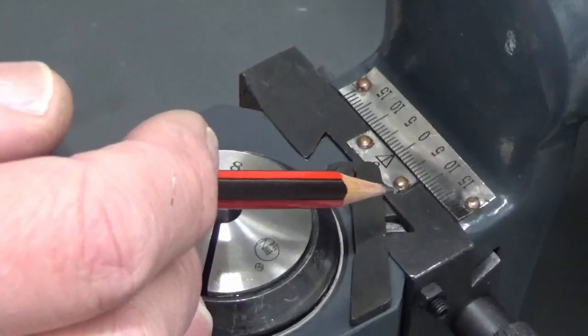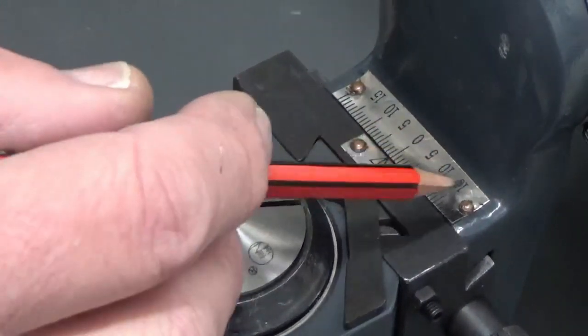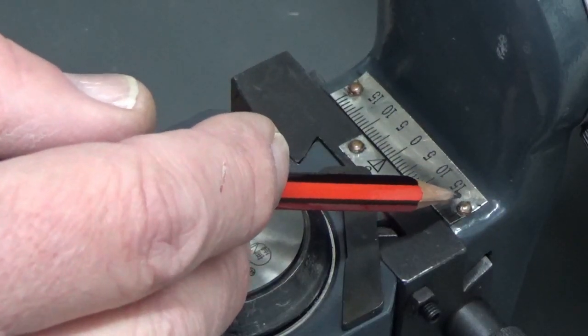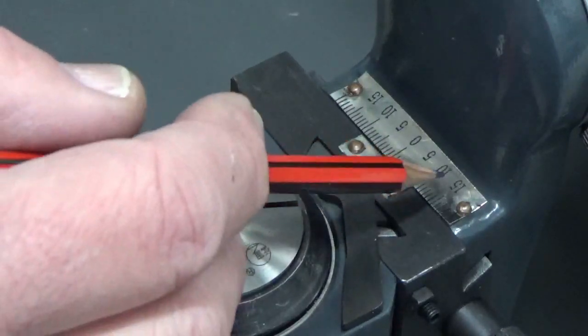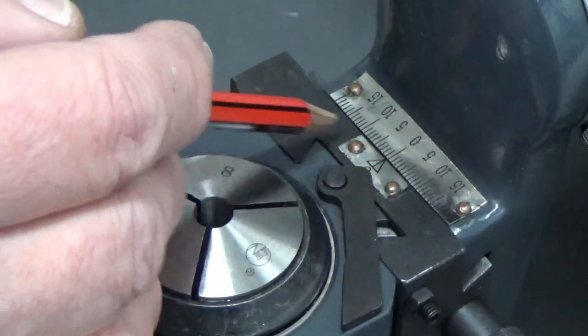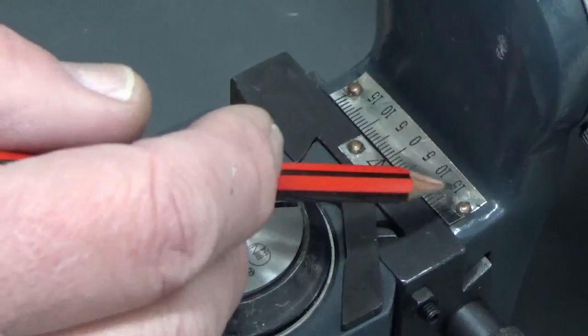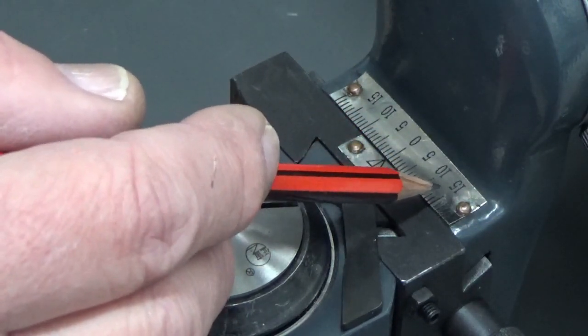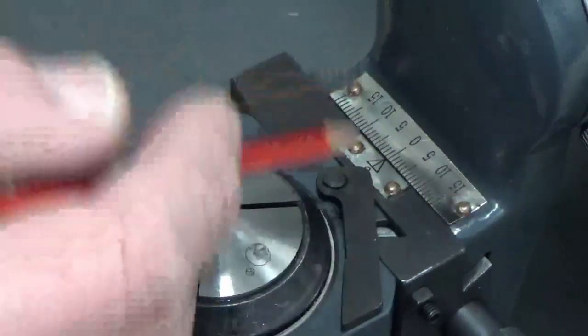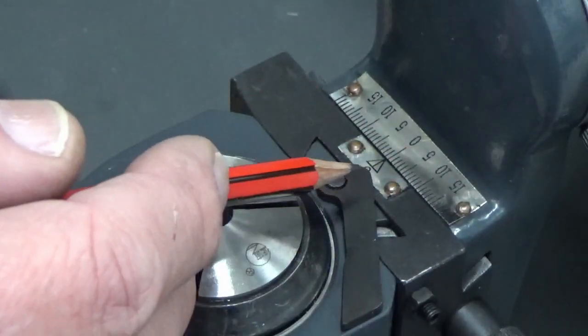Now if you look at some of the other D-bit grinders out there, in particular the Deckel which is basically what these are all copied from, they'll have a main graduation up the top area here and they'll have a subdivision graduation on the bottom so that you can actually adjust this for parts of 1 inch or parts of 1mm.